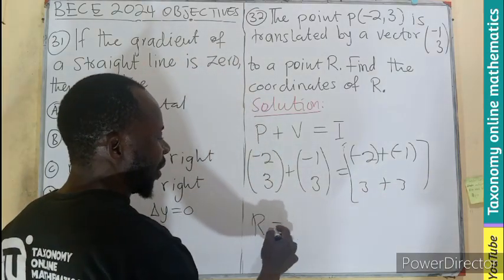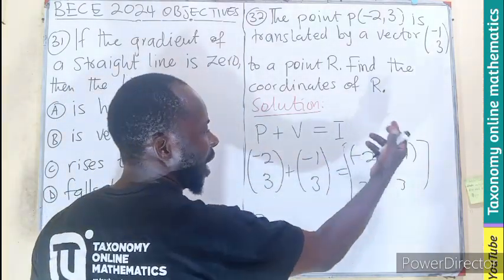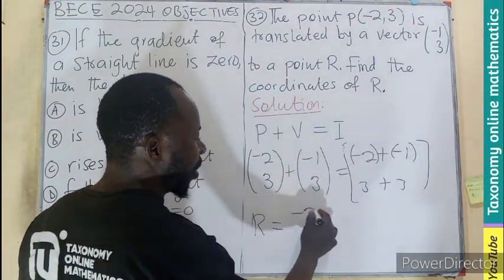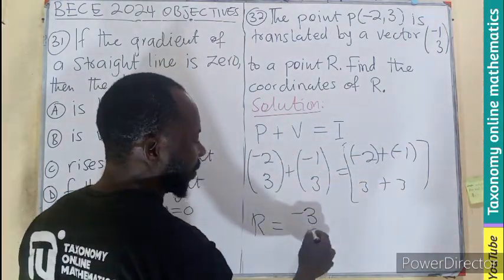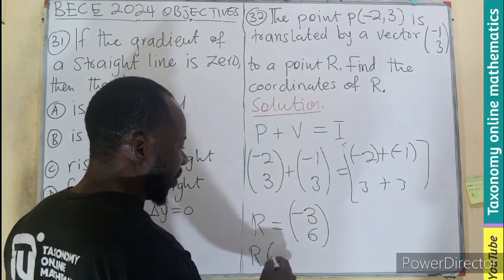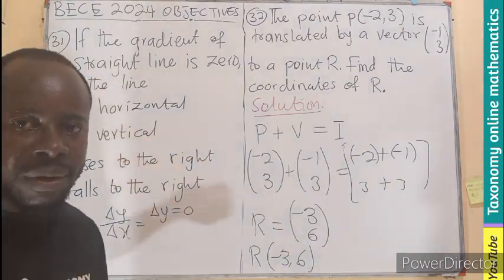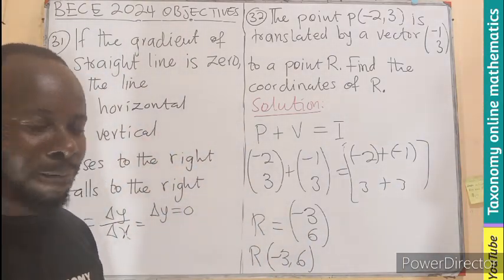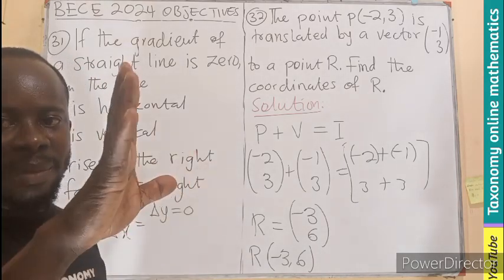So our vector R in the column form is going to be, if we have -2 and add -1 to it, it becomes what? -3. Three plus three will give you six. So in this case, vector R will just be (-3, 6) in the coordinate form. I get this to be okay. All right. Don't forget to share, like, and comment. Bye-bye.